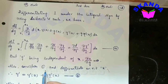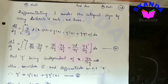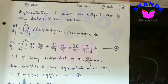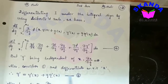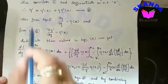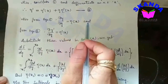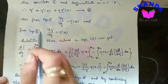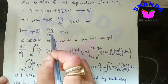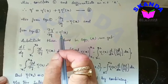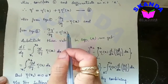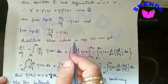Consider equation 1 and differentiate with respect to x. Therefore y' equals y'(x) + g·η'(x), which is equation 5. Also, from equation 1, ∂y/∂g equals η(x), and from equation 5, ∂y'/∂g equals η'(x). Substituting these two values into equation 4: